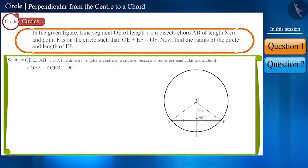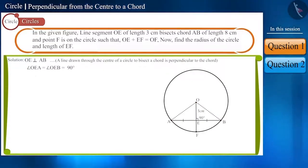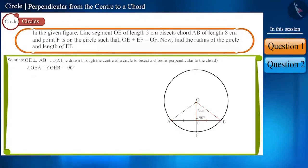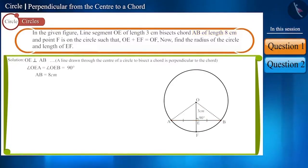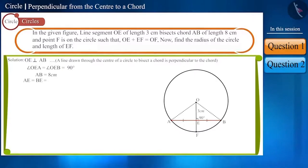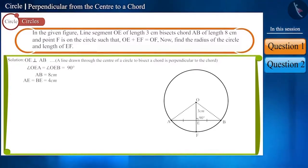OA and OB are the hypotenuse of the right angle triangles OEA and OEB respectively. We are given the length of AB as 8 cm, and E is its midpoint. That is, AE and BE are equal, so their length will be 4 cm. By using the Pythagoras theorem in either of the two triangles, we can find the radius of the circle.